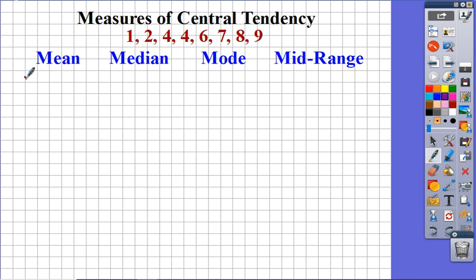The mean is your basic average. You take all the numbers, add them up, and divide by the number of numbers. We show that as the sum of all the data values x divided by the number of data values n. In this case, 1 plus 2 plus 4 plus 4 plus 6 plus 7 plus 8 plus 9 equals 41, divided by 8 numbers. 41 divided by 8 gives us 5.125. That's our mean, shown as x-bar.